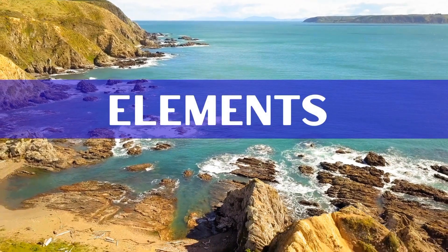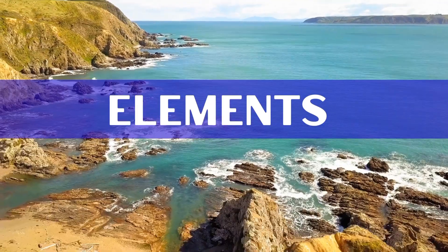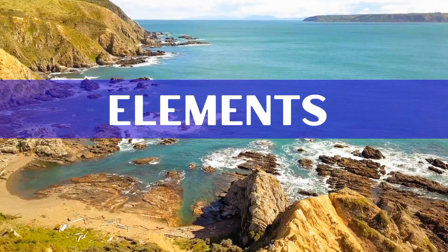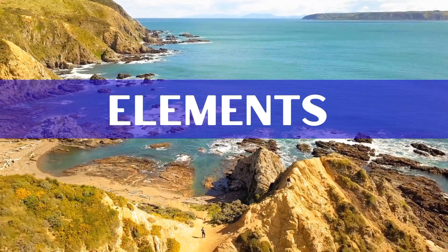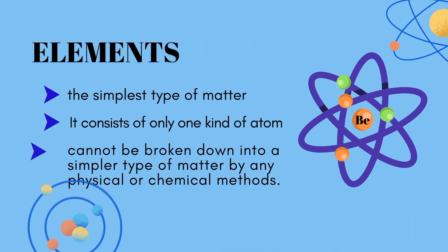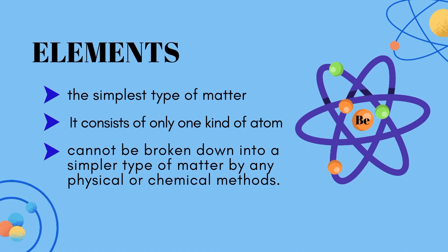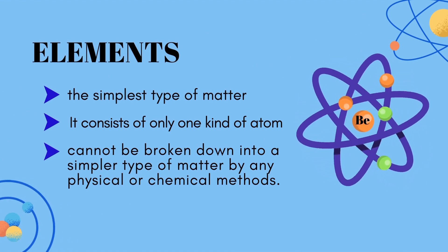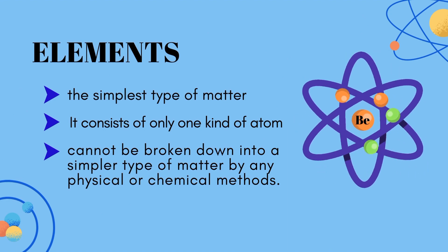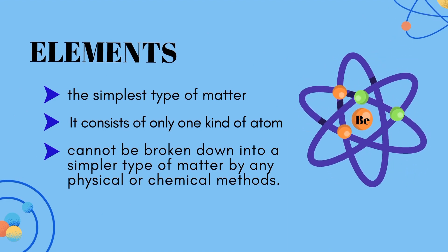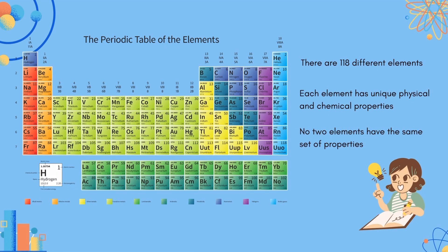Everything in nature, from the mountains and the oceans, to the air we breathe and the food we eat, is made up of simple substances called elements. If you're going to look at the periodic table, there are 118 different elements. Each element has unique physical and chemical properties, and therefore no two elements have the same set of properties.